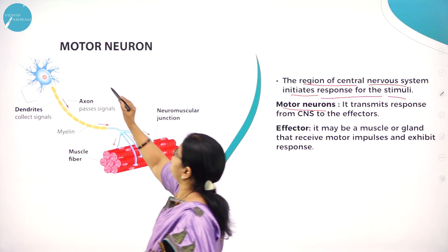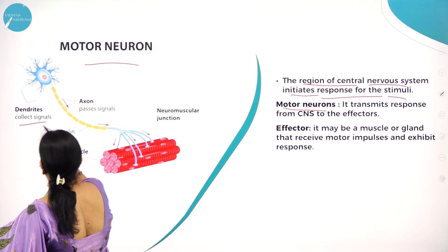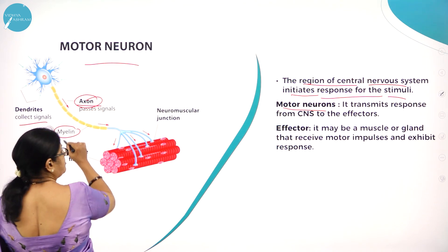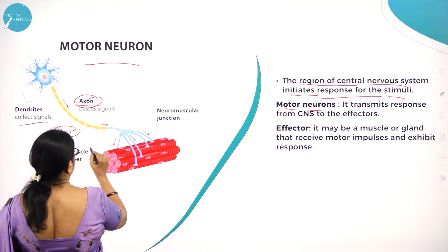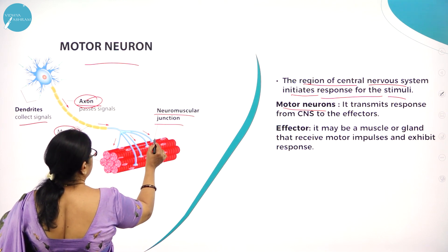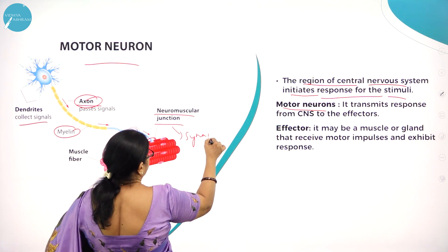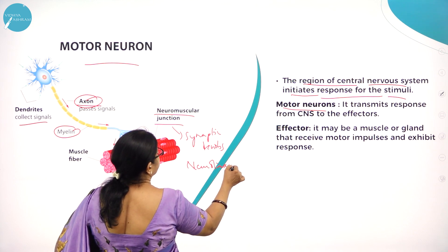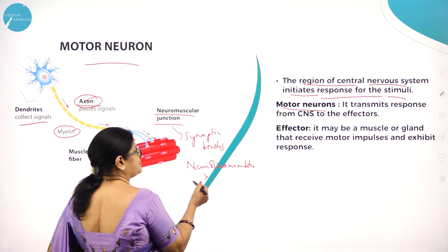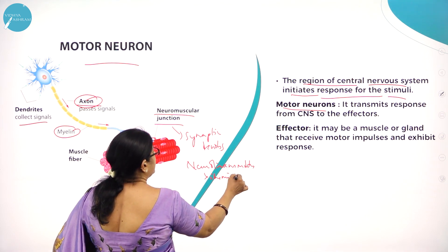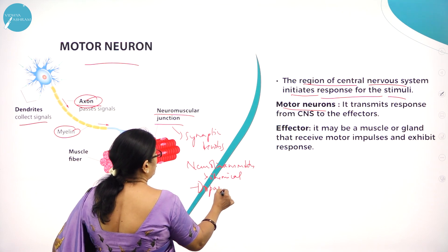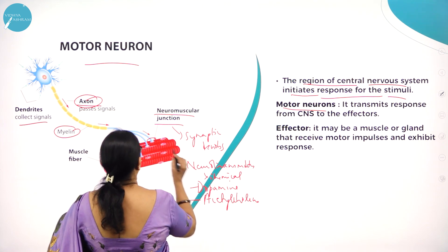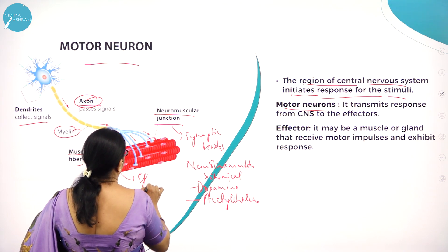Here you can see a picture of the motor neuron. The dendrites collect the signals and the signals pass through the axon. This is a myelinated neuron where it is covered by a myelin sheath. Then it goes to the neuromuscular junction, that is the synaptic knobs, which contain neurotransmitters like dopamine or acetylcholine. From there it goes to the muscle fiber, which is the effector.